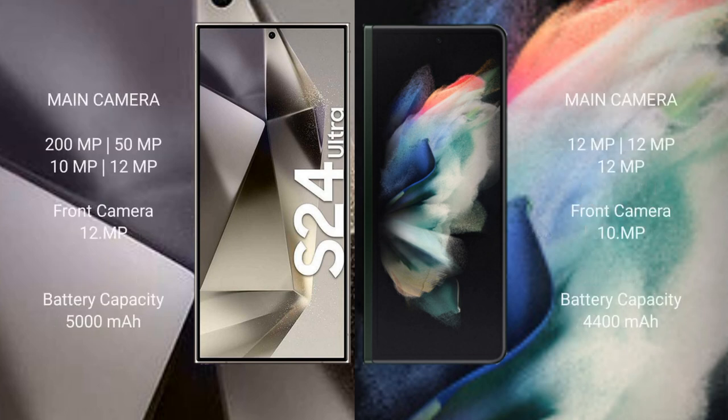The Samsung Galaxy S24 Ultra features a rear quad-camera setup: 200MP, 50MP, 10MP, and 12MP lenses, with a 12MP front camera.